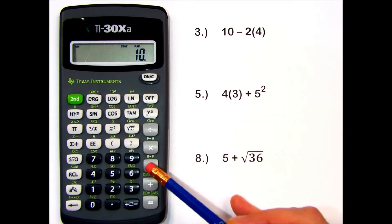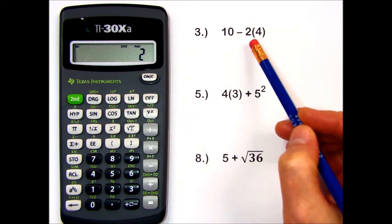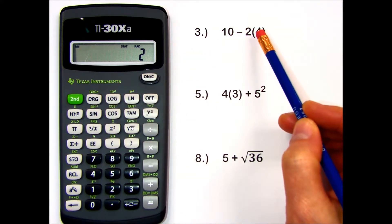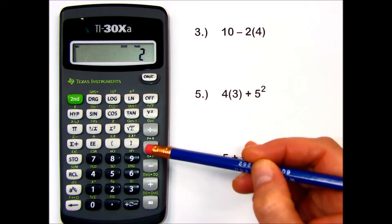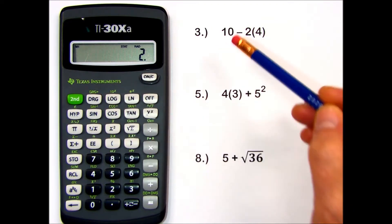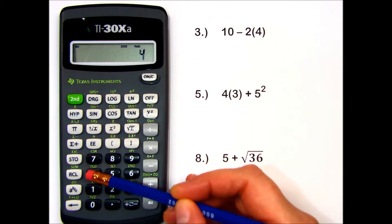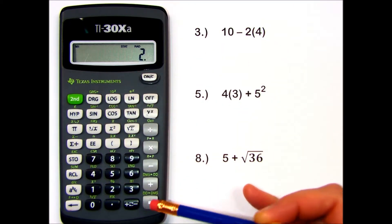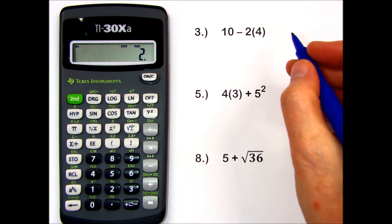10 minus 2. On this calculator, I need to tell my calculator this is multiplication by pressing the times key, even though we did not write it on paper. So 2 times 4. When I press equals, I get the correct answer, which is 2.